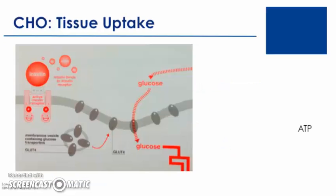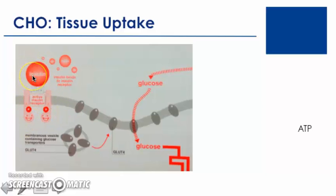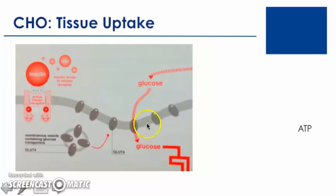In this diagram, we see the insulin-dependent uptake of glucose by muscle cells. The hormone insulin increases after consuming a carbohydrate-containing meal. We see insulin binding to the insulin receptor on the outer membrane of the muscle cell. This in turn activates a cascade of events, eventually leading to the translocation of GLUT4 channels into the membrane of the muscle cell.